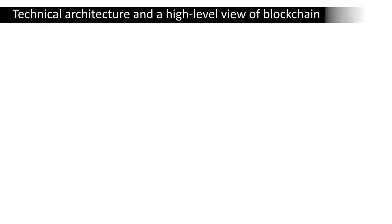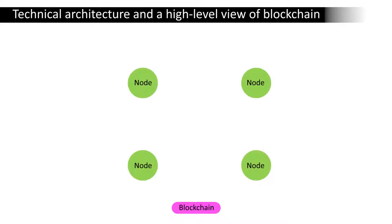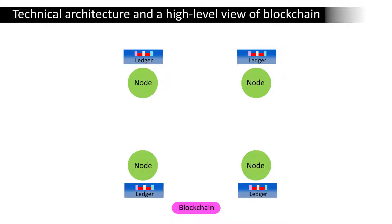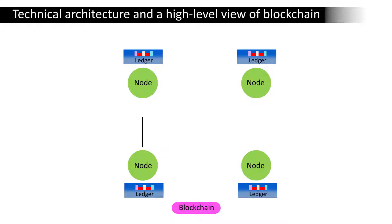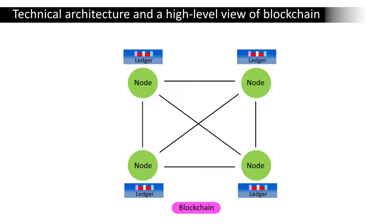Looking at the technical architecture and a high-level view of the blockchain: in general, a blockchain system consists of a number of nodes, each of which has a local copy of a ledger. In most systems, the nodes belong to different organizations. The nodes communicate with each other to gain agreement on the contents of the ledger and do not require a central authority to coordinate and validate all transactions. The process of gaining this agreement is called consensus, and a number of different algorithms have been developed for this purpose.